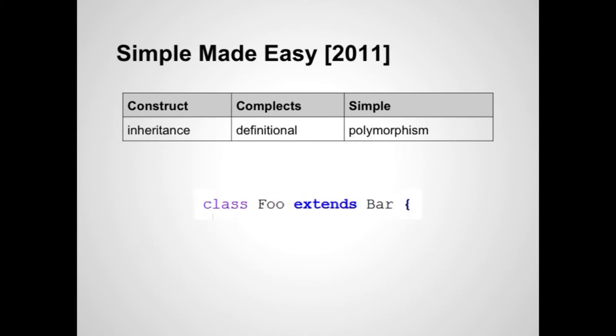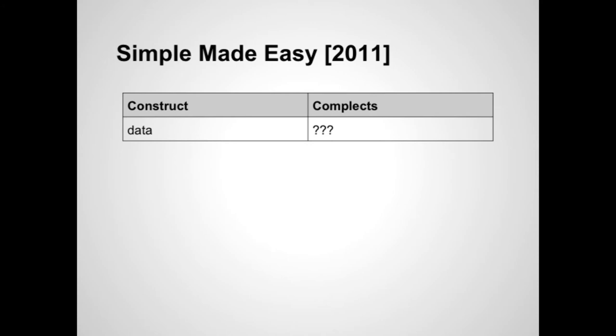Inheritance. Inheritance is definitionally complecting. Foo complected with bar, you can't have foo without bar anymore. Replace it with polymorphism, composition. What's data complected with? Nothing. Data is not complected with anything. It's so simple and beautiful. Stop hiding it behind classes and interfaces. You can just use sets and vectors and arrays and maps all by themselves. I know that sounds scary, but it works out really well.